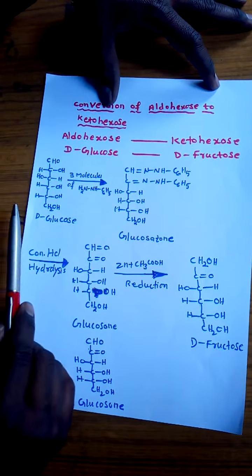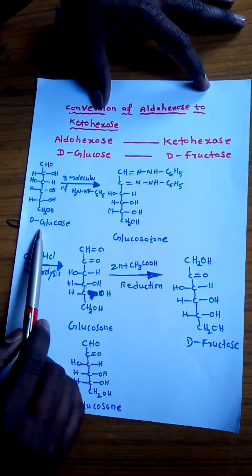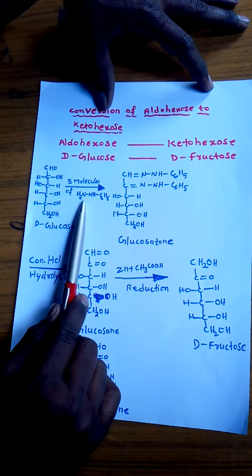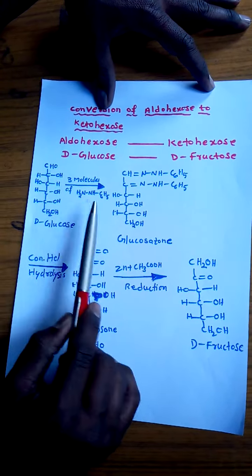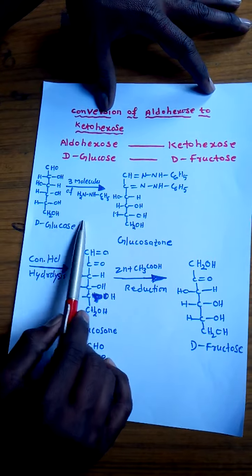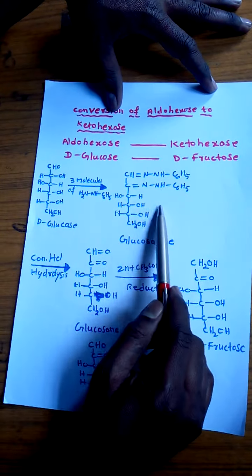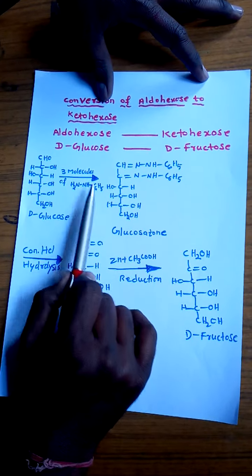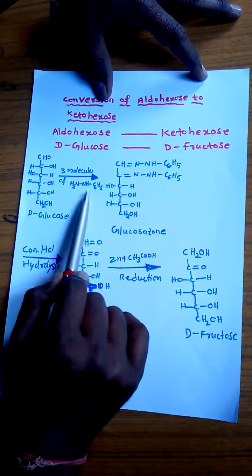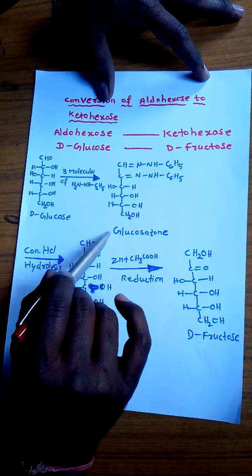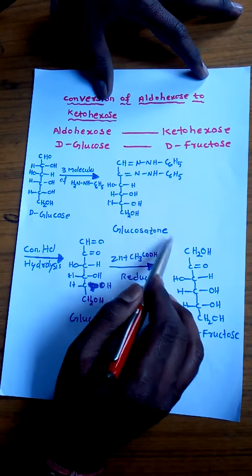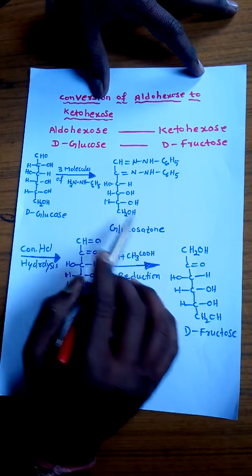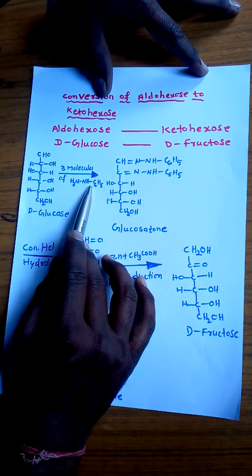So first of all here we treat the D-glucose with phenylhydrazine. When we treat with phenylhydrazine we get a condensate product. Here for one D-glucose molecule three molecules of phenylhydrazine are consumed and the product obtained here is known as glucosazone. The condensate products of phenylhydrazine are called osazones.